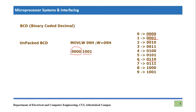For example, to store the BCD value 3, we write 'Move Literal to Working, 03h', making W equal to 03, or simply 3 in BCD. The upper four significant bits — the upper nibble — are not used. This is the defining characteristic of unpacked BCD.